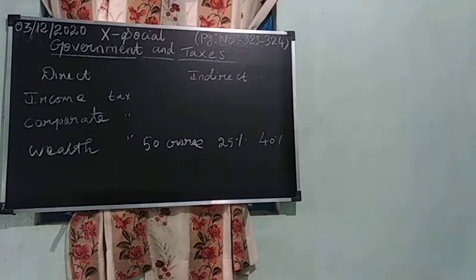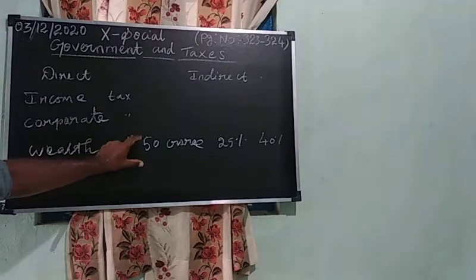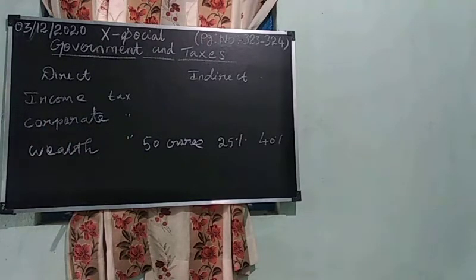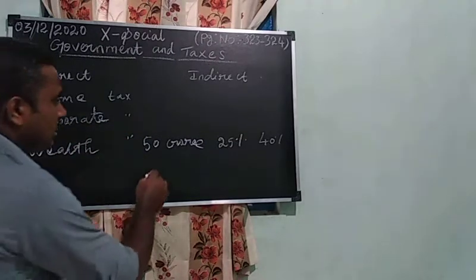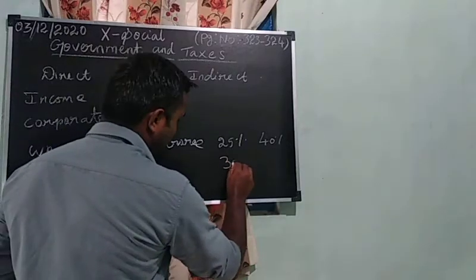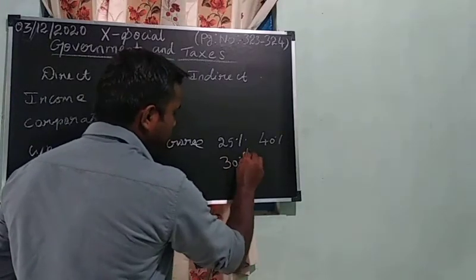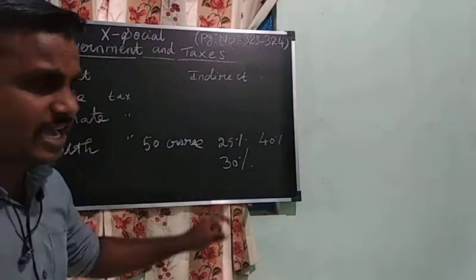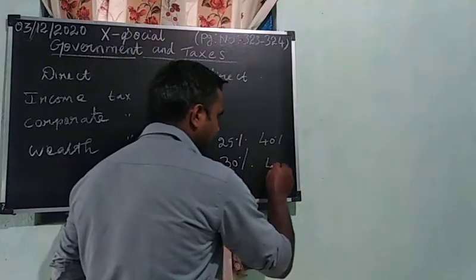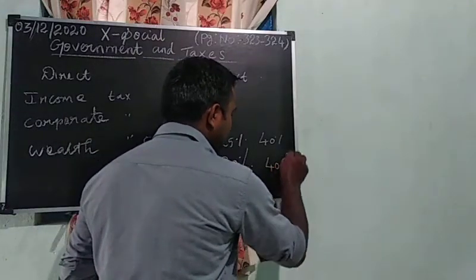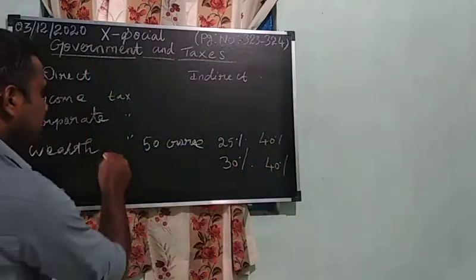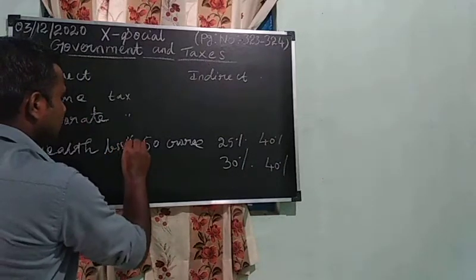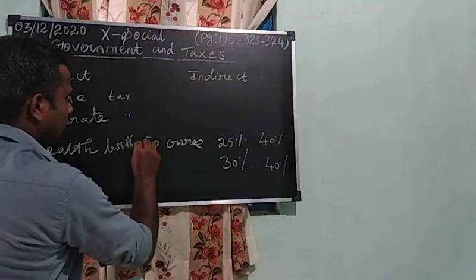For companies with less than 50 crore income, Indian companies should pay 30% tax. That is the corporate tax structure.